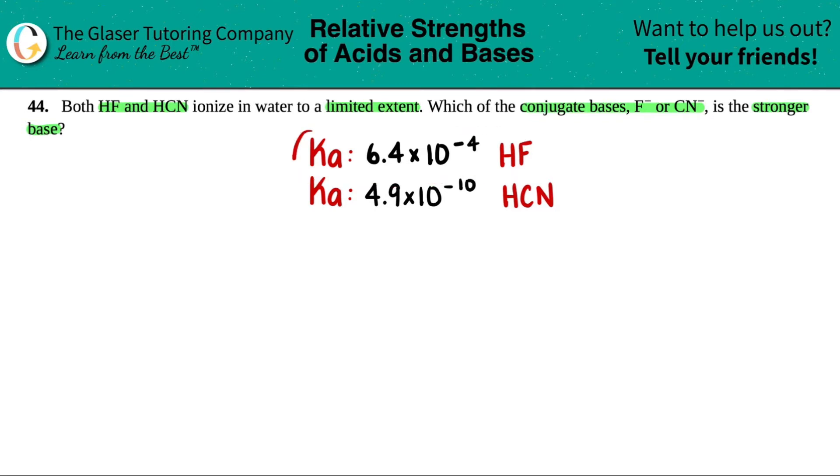So the ionization constant, that's Ka for the acid HF, is 6.4 times 10 to the negative fourth. The ionization constant for the acid HCN is 4.9 times 10 to the negative tenth.